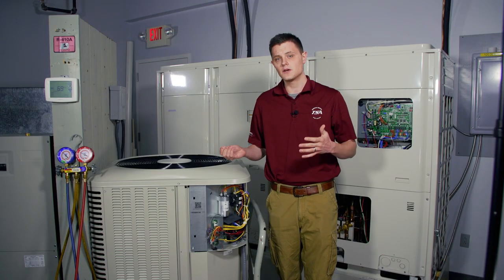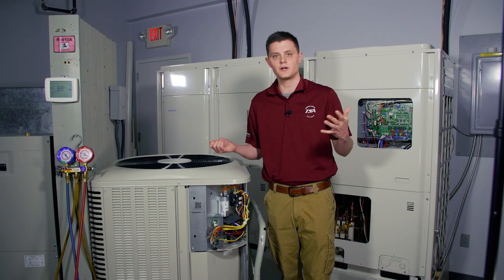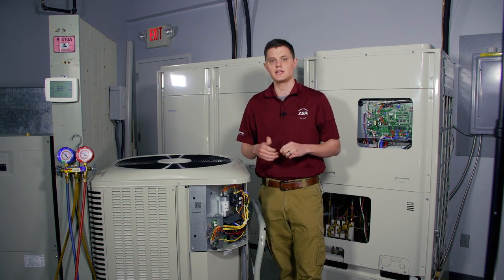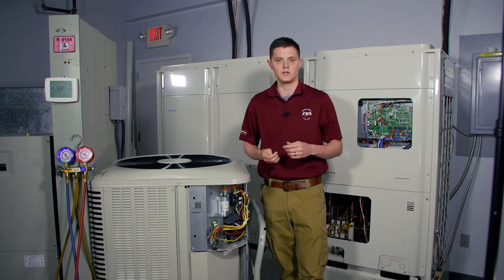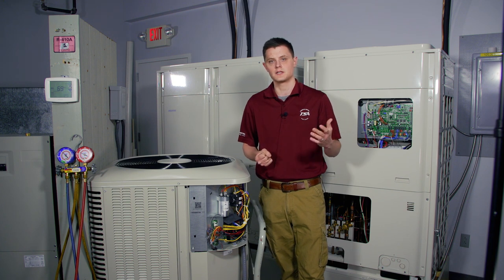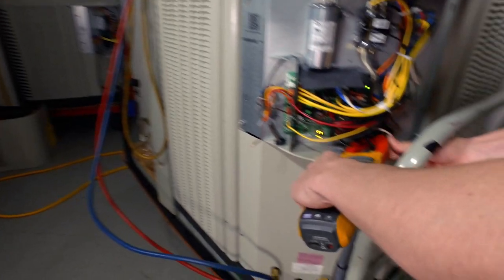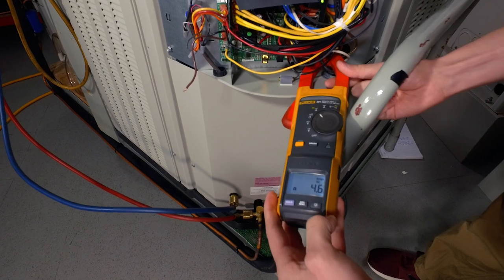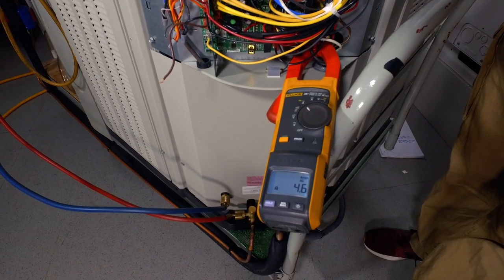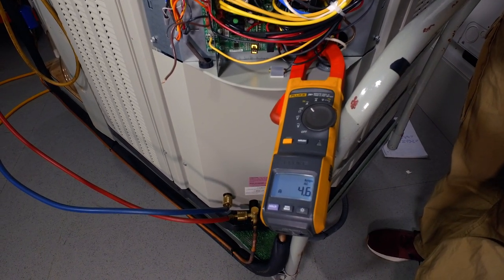The second way that you can determine whether you're in first or second stage is to take an amp draw on your unit. You can grab a wire from your disconnect coming into your unit. You'll take a clamp amp meter. Currently we're running about 4.6 amps in first stage.